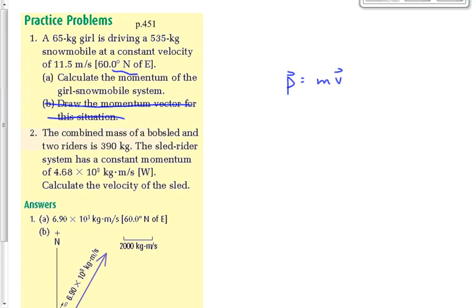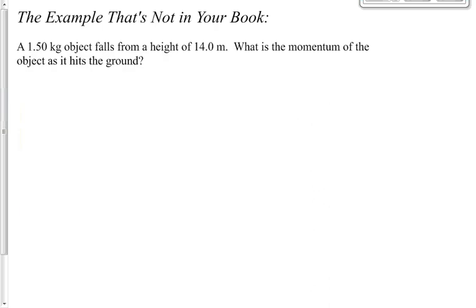Question number two: the only real trick is rearranging — take M over by dividing, so V = P over M, then do the math to get the answer. Let's do another example — this one's a little bit trickier and not in your textbook. Give yourself a second to copy it down and read through it.